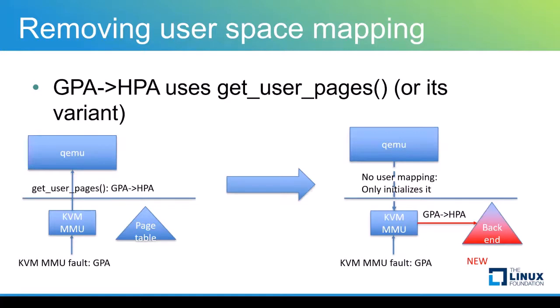Let's discuss the KVM hypervisor side. Currently, when a guest touches its guest memory, a KVM MMU fault happens and the KVM hypervisor is notified, so that KVM MMU converts the guest physical address into a host physical address. KVM MMU then updates the KVM MMU page tables, which are different from user CPU page tables.